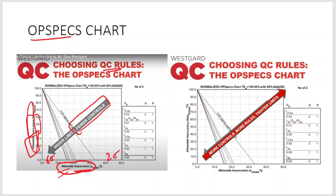If your analyte or method is showing 3 sigma, 2 sigma, or below 2 sigma performance, then you need more rules, tighter limits, and more controls. You have to follow more rules and run more QCs for that particular process.